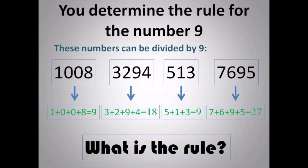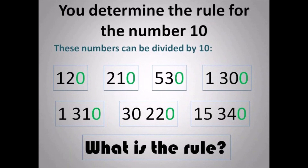And for the number 9, these numbers can be divided by 9. Notice what I did for 1008: I added 1 plus 0 plus 0 plus 8 and got 9. I added 3 plus 2 plus 9 plus 4 and got 18. 5 plus 1 plus 3, I got 9. 7 plus 6 plus 9 plus 5, I got 27. Why do I add them? Why are those numbers significant? You should be able to determine the rule.